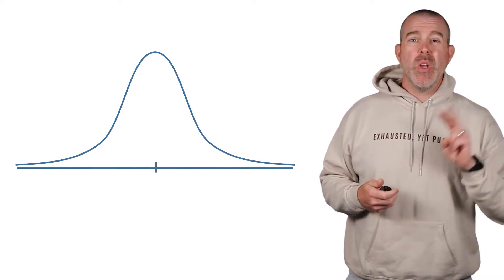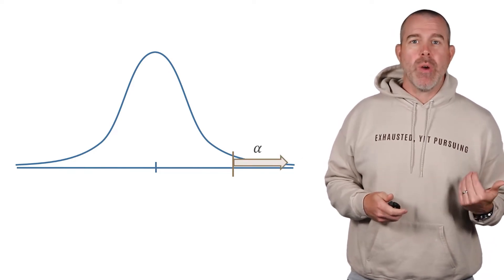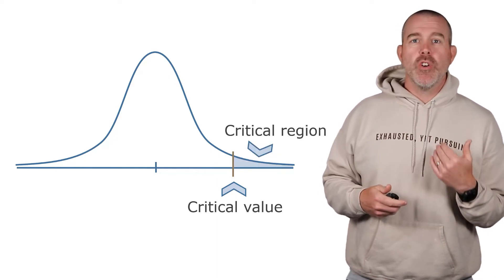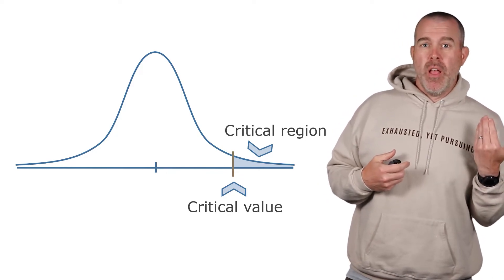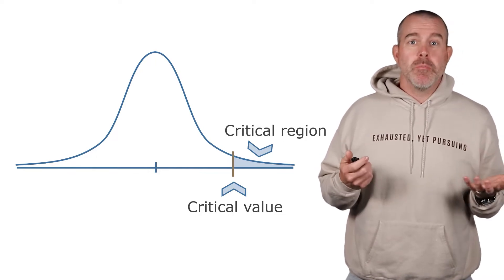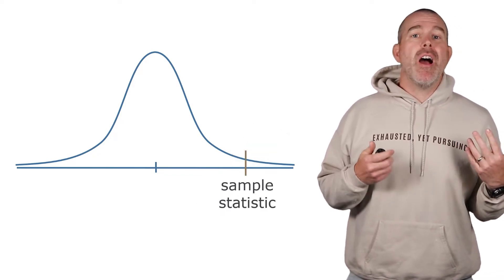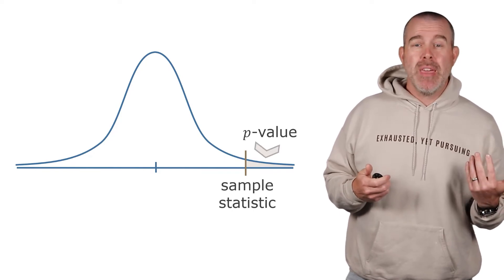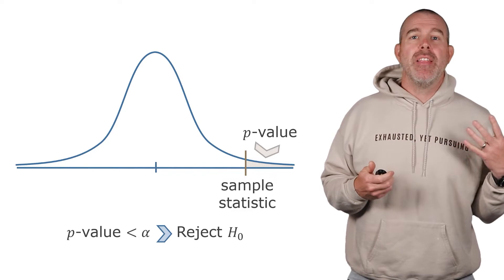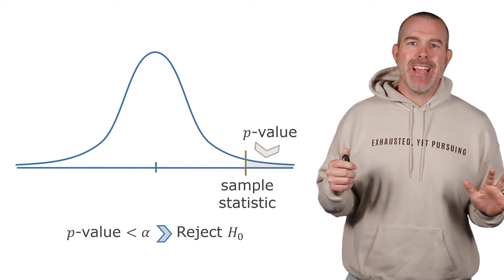How do we make a decision in our hypothesis test? We have our distribution shape. There's two different methods. One method is we're going to put a value here on the right that would have alpha area to its right. We're going to call that the critical value, that region on the right is the critical region. We're going to say if we observe anything further over there, then we're going to conclude the null hypothesis must have been incorrect and we think the alternative is true. The second method is we're going to compute our sample statistic. Let's say it happens over here on the right. We're going to find the probability of being to the right - that's called the p-value. If our p-value is less than alpha, the level of significance, we're going to reject the null hypothesis.